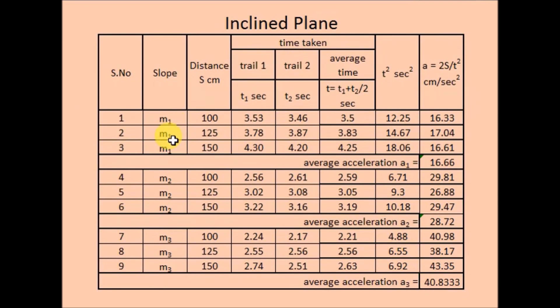So for slope 1 the acceleration is 16.66. In the case of slope 2 the acceleration is 28.72. And in the case of slope 3 the acceleration is 40.83.